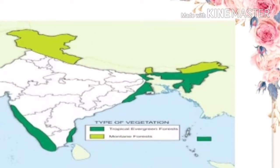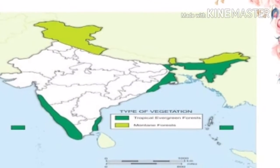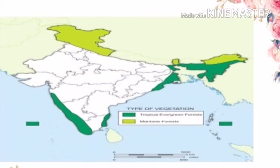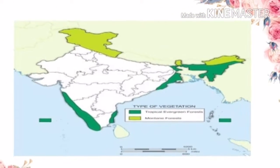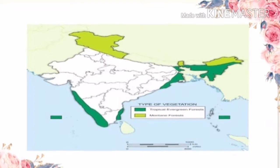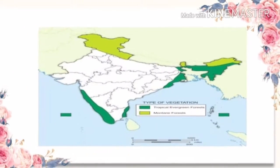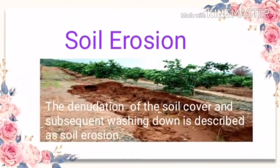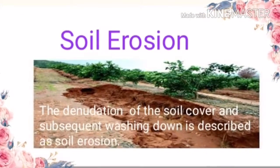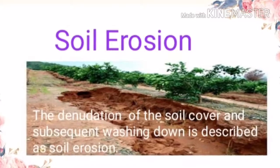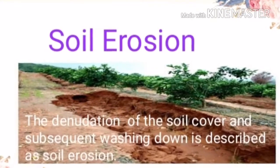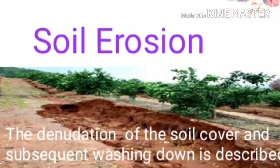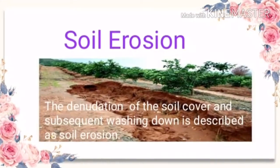These places include Meghalaya, Arunachal Pradesh, Uttarakhand, Himachal Pradesh, and Jammu & Kashmir. Next is soil erosion. Denudation of the soil cover and washing down of the soil cover is known as soil erosion.